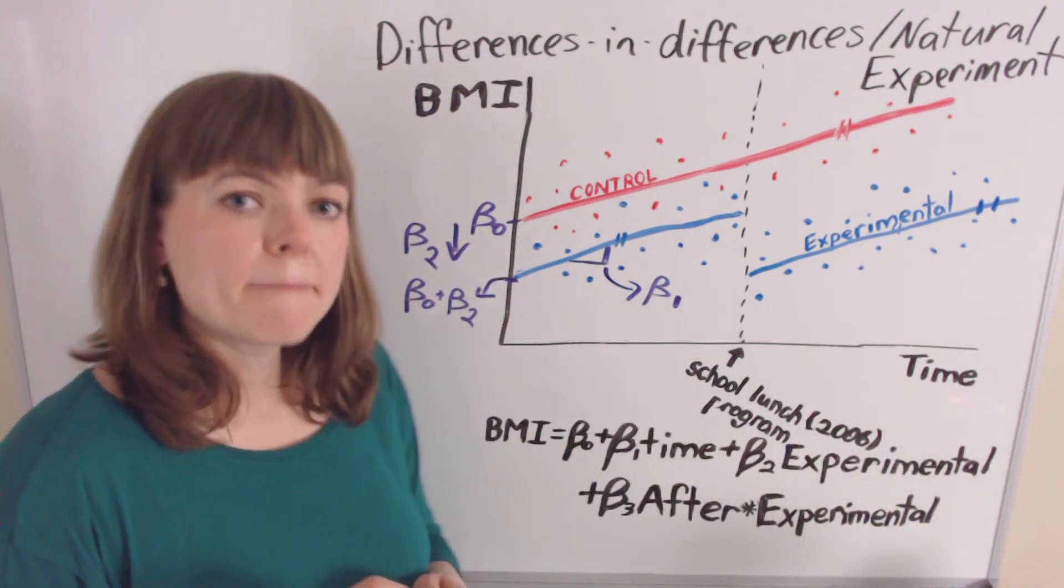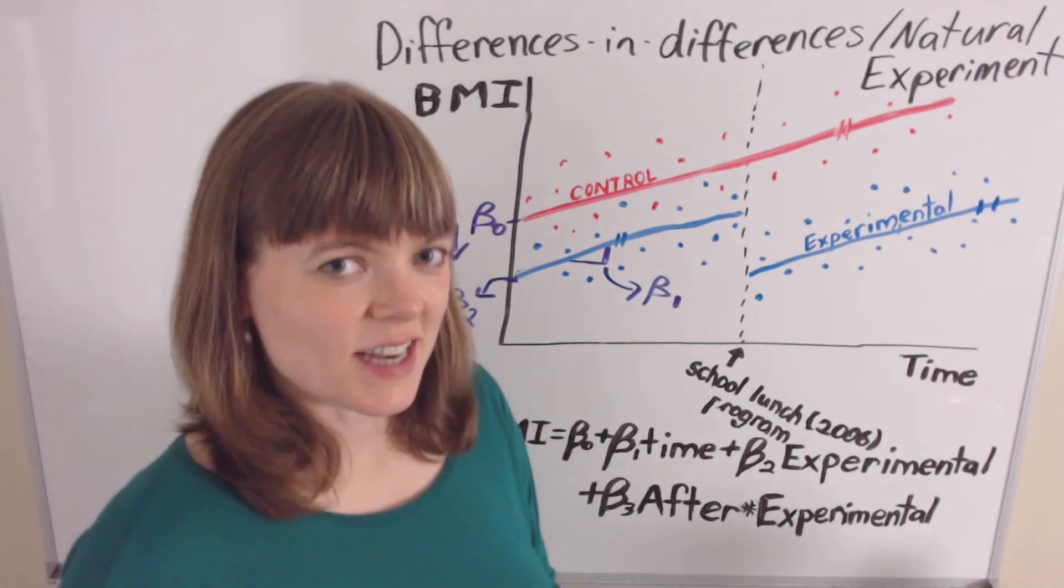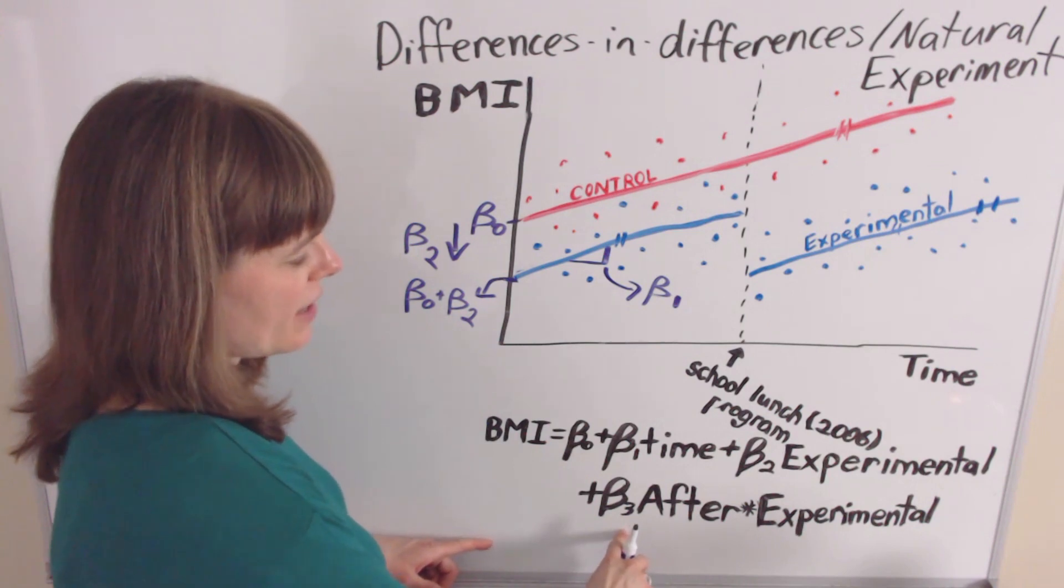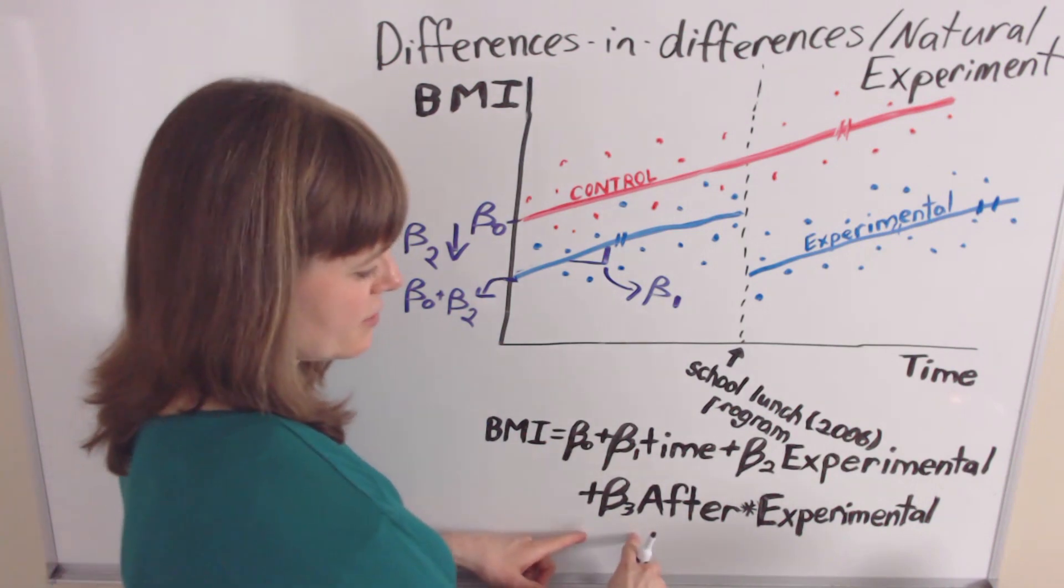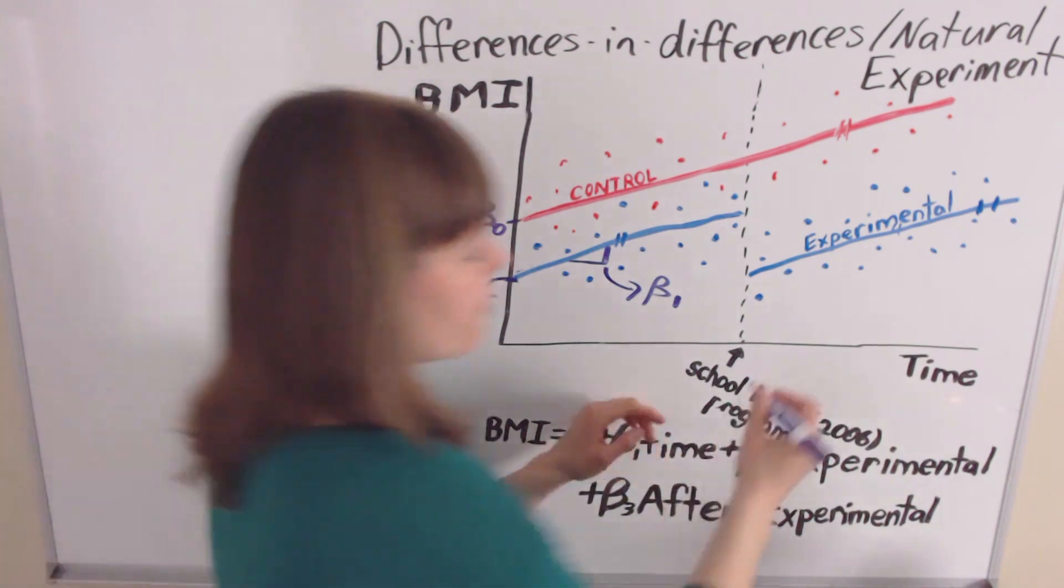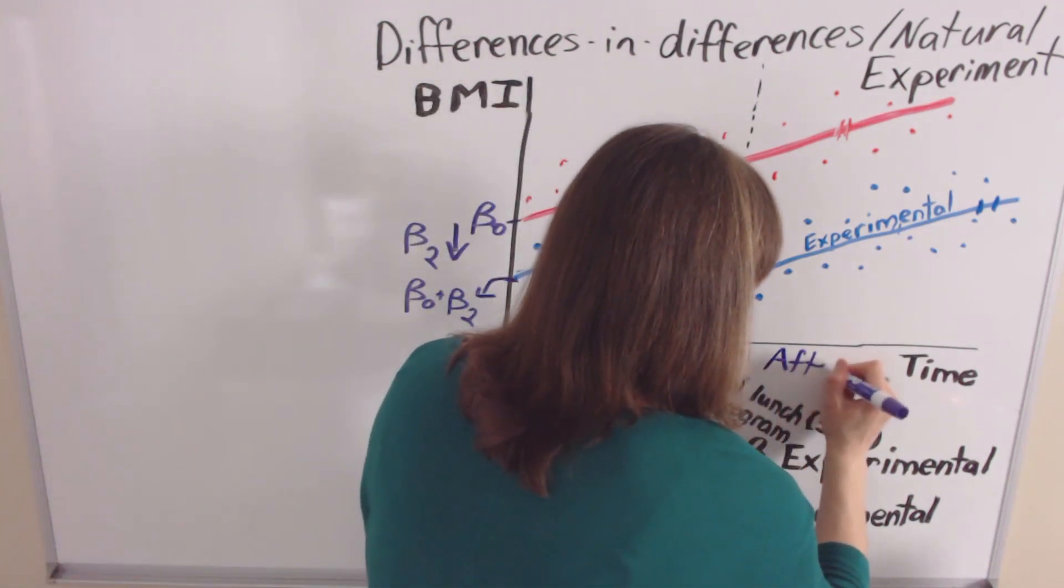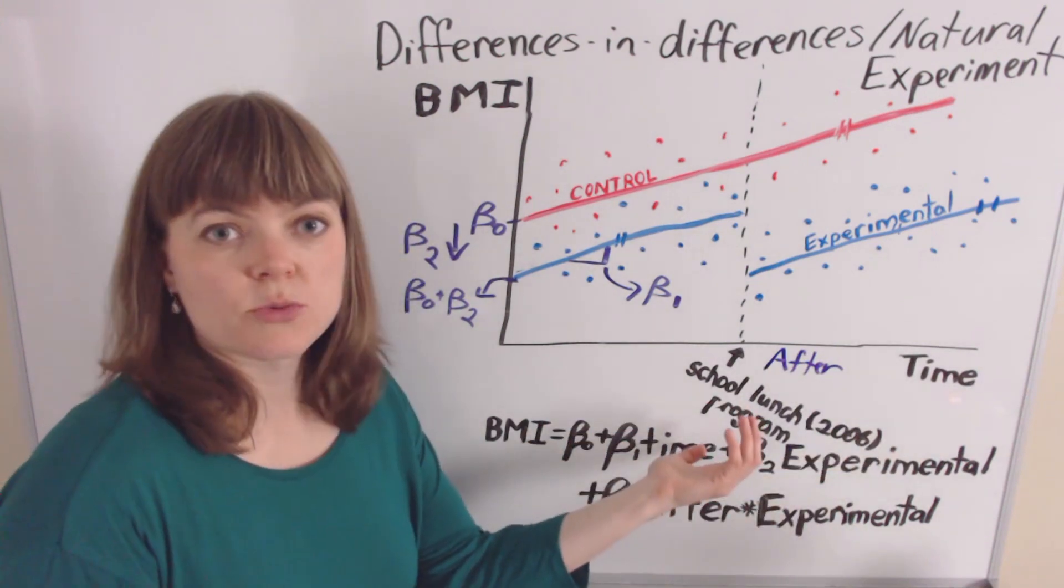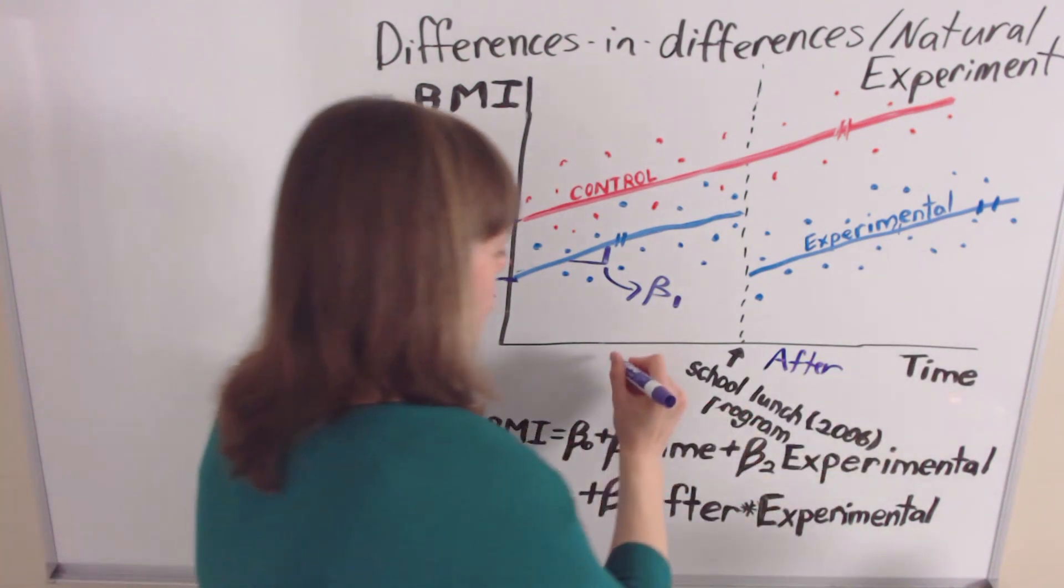And then our main variable of interest, the variable that actually establishes causality in this case, is going to be beta 3. And beta 3 is going to represent the adjustment that takes place after the school lunch program. So of course, after is every time after whatever change we're trying to address, where this is before.